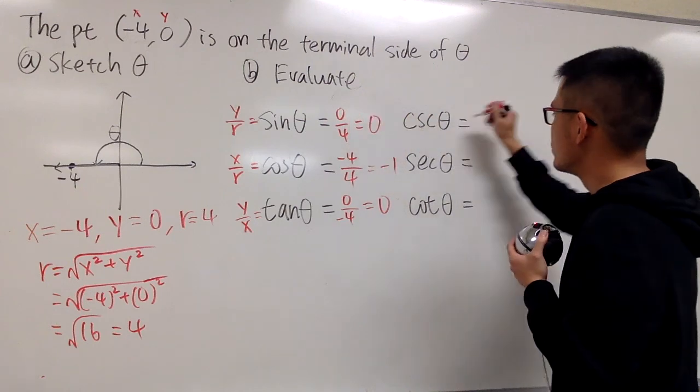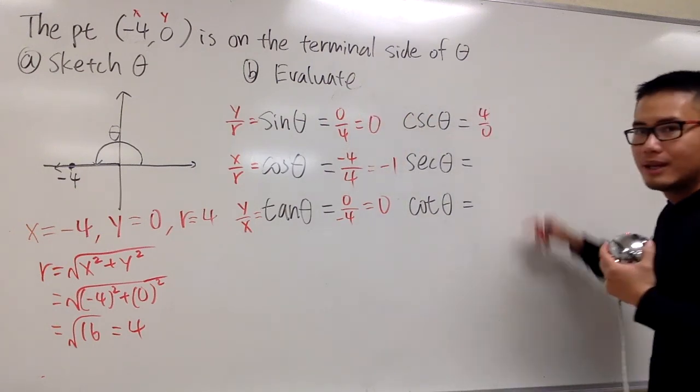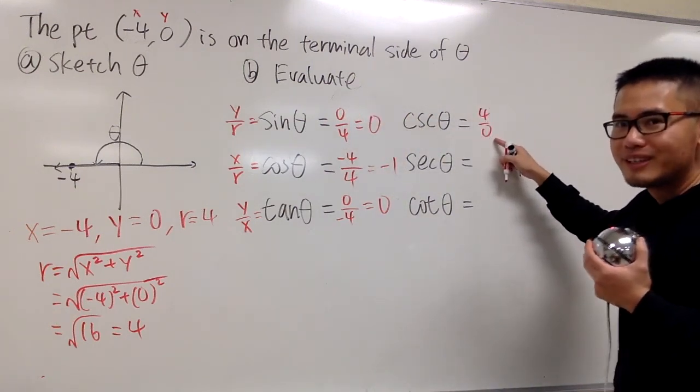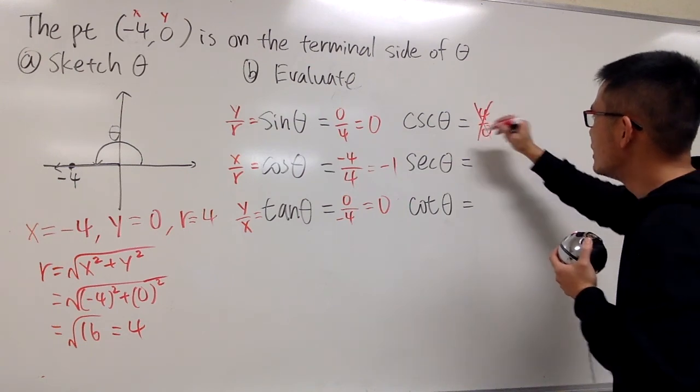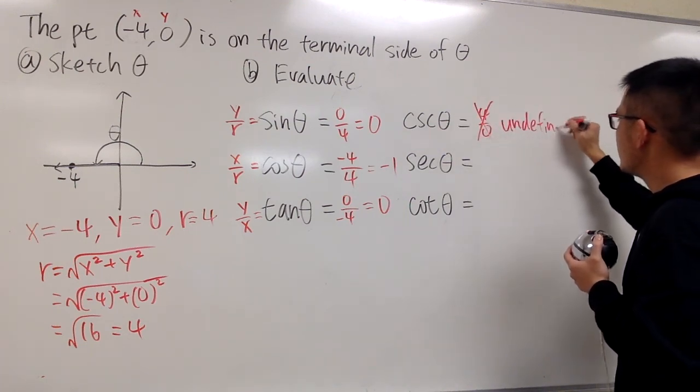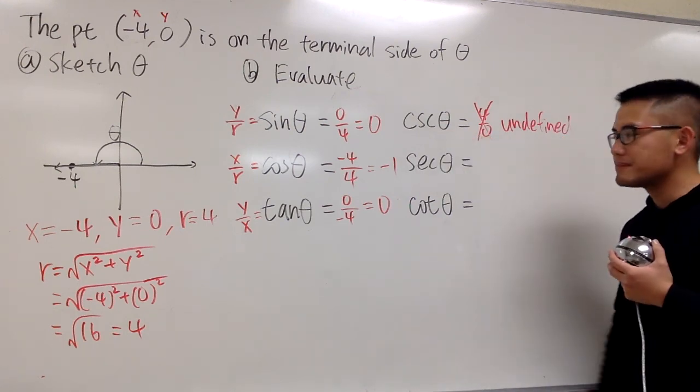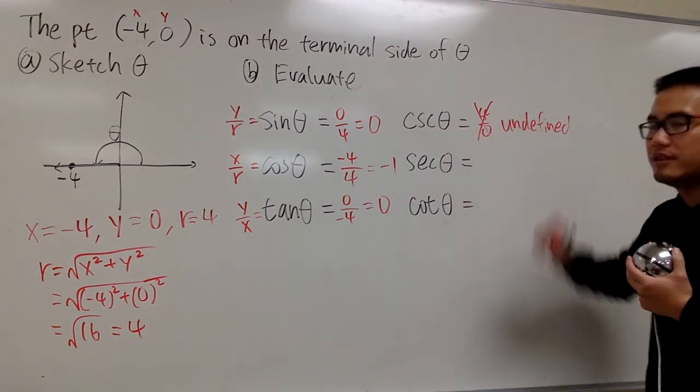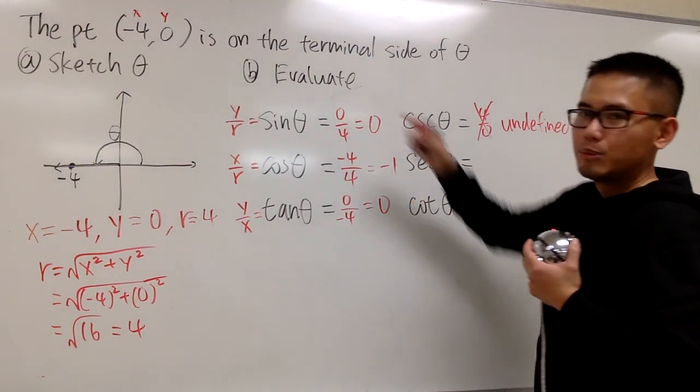But anyways, we'll just do 4 over 0, but I'm in trouble, because I cannot have 0 in the denominator. So in this case, this is actually undefined, this will be the response to this, because we cannot have 0 in the denominator once we take the reciprocal of that.